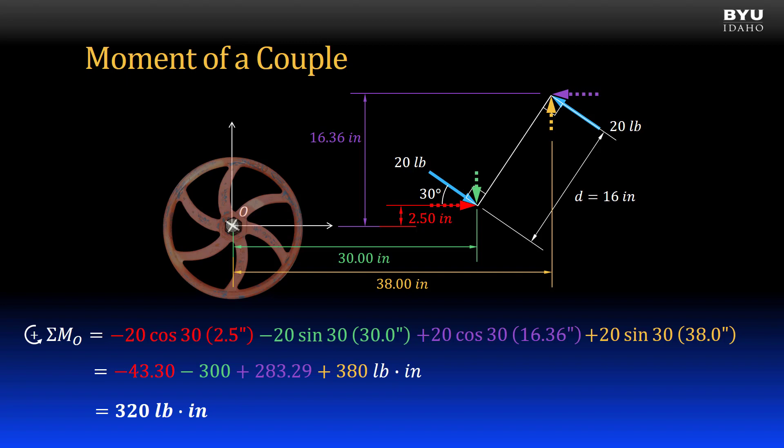Summing the terms, I get 320 pound inches, which is the same magnitude and direction we got when the forces were centered about point O. It turns out we will get the same value for the moment caused by this force couple about any point in space, not just point O. If these forces were somehow physically connected back to the wheel, then the wheel would rotate.